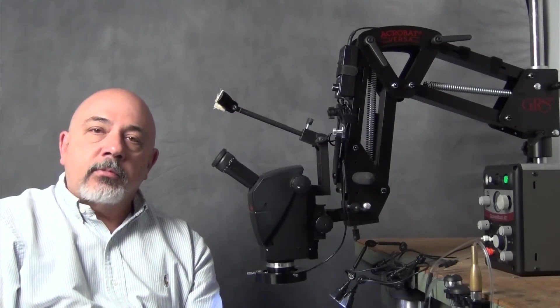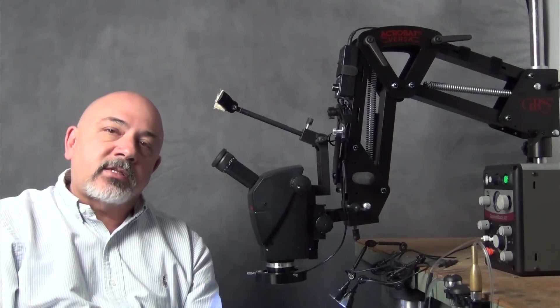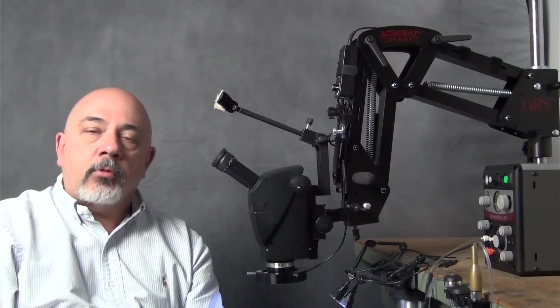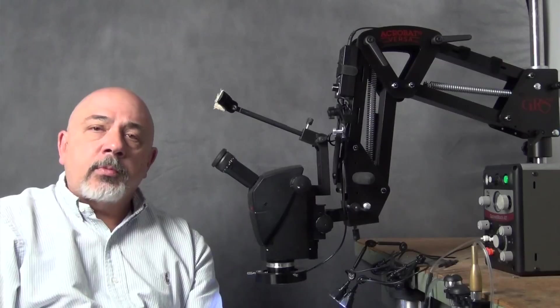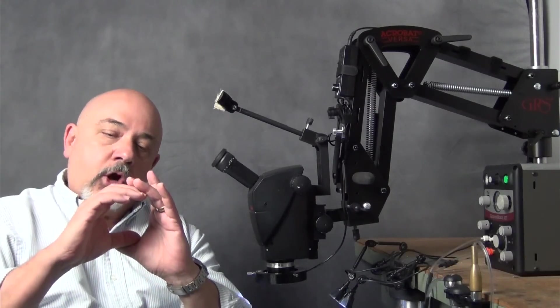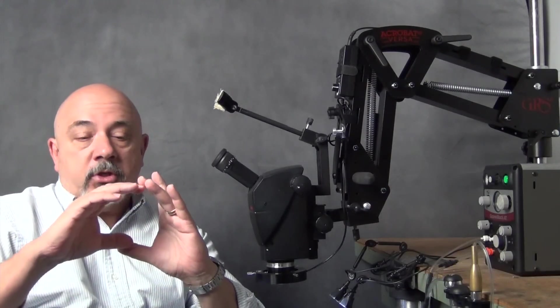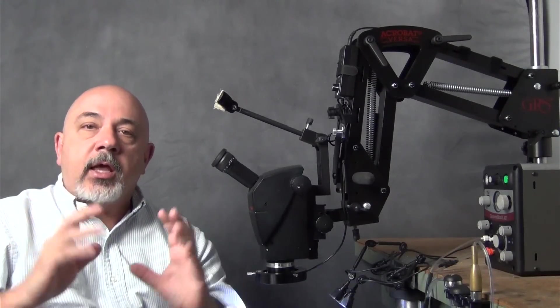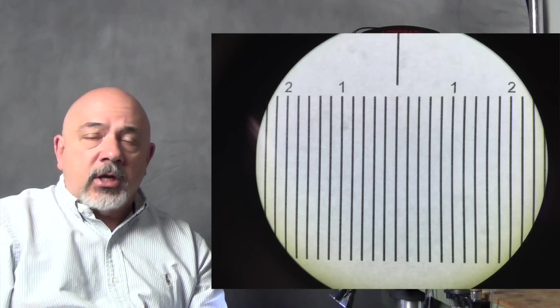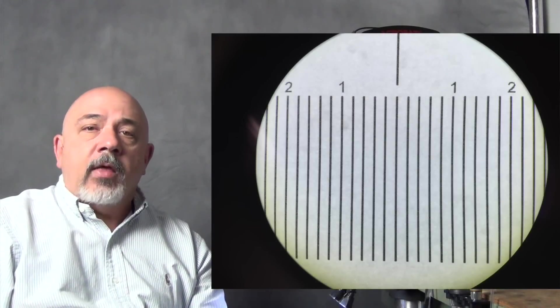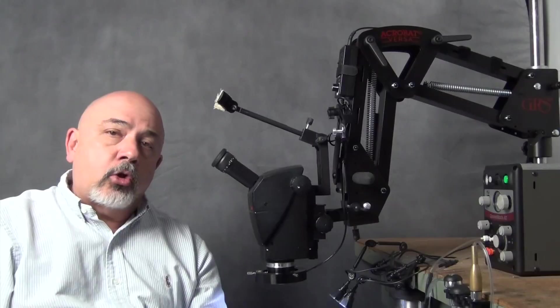As for sharpness, my benchmark is my Zeiss Stemi 2000 series microscope and the Leica is at least as sharp, if not sharper, than my Zeiss. Most microscopes are adequately sharp in the center and the sharpness starts to degrade as you reach the edges of the field of view. The Leica is extremely sharp in the center and all the way to the edges and this is very, very high optical performance.